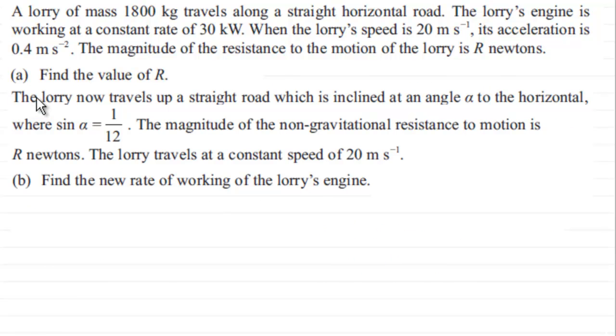Now in this next part, we're told that the lorry now travels up a straight road which is inclined at an angle alpha to the horizontal, where sine of alpha equals 1/12. And the magnitude of the non-gravitational resistance to motion is R newtons.